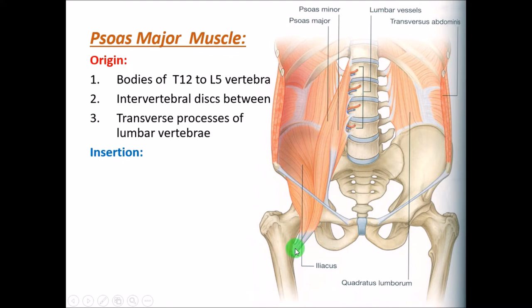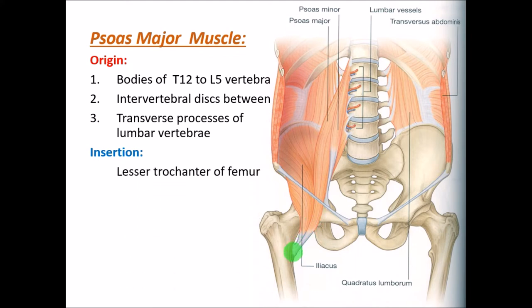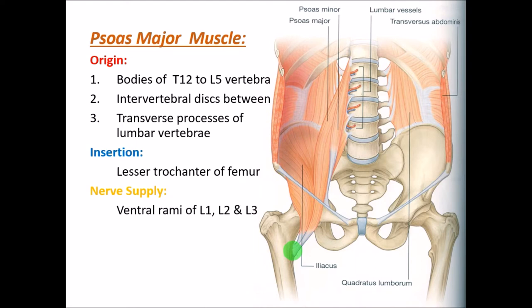The insertion of the psoas major: the muscle goes down into the pelvis, runs all the way into the thigh, and gets inserted into the lesser trochanter of the femur. The nerve supply is from the ventral rami of L1, L2, and L3 vertebral levels.